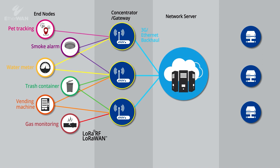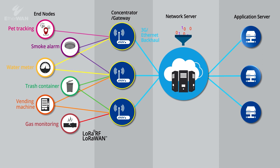The network server is a core zone to concentrate all LoRa data, then dispatches data to the specified application server. The application server, based on different requirements, will handle data processing on the corresponding application server.